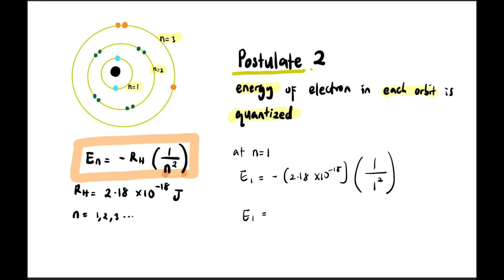For example, if n equals one, E1 is calculated by substituting one over one squared, giving E1 equals negative 2.18 times 10^-18 joules. This means any electron at n equals one has this predetermined energy. At n equals two, substituting 2 into n gives negative 5.45 times 10^-19 joules. E3 is negative 2.42 times 10^-19 joules.